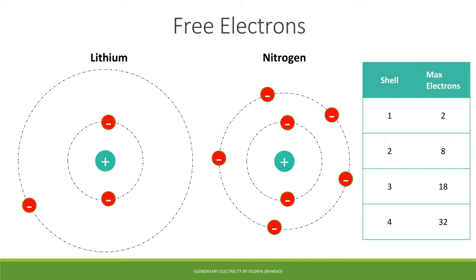The electrons revolve in orbits at fixed locations — these fixed rings are called orbits. There is a strict rule: every orbit can only hold a stipulated number of electrons. The first orbit can contain only 2 electrons, the second orbit can contain 8, the third can contain 18, the fourth can contain 32, and so on.